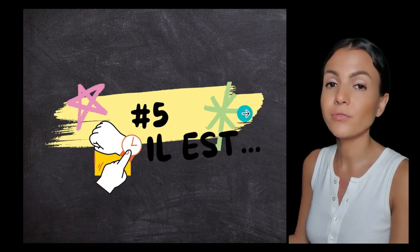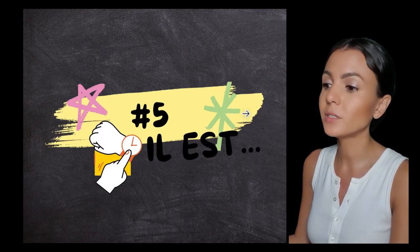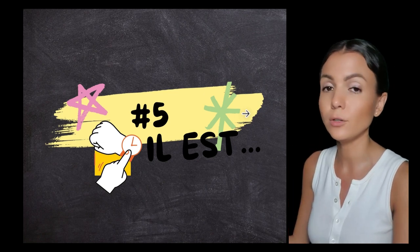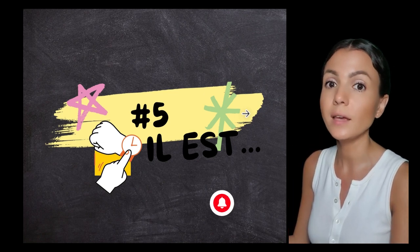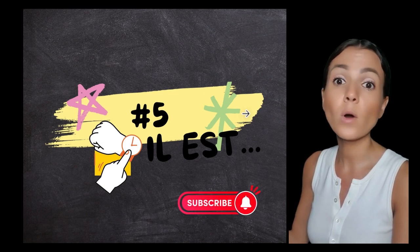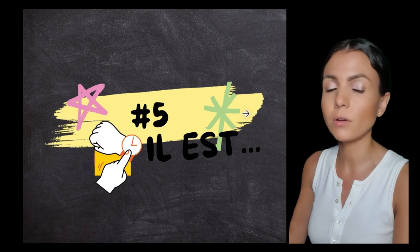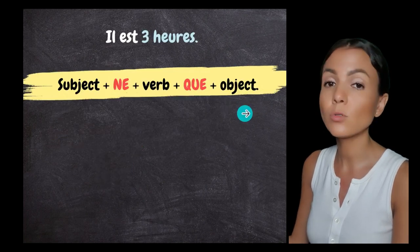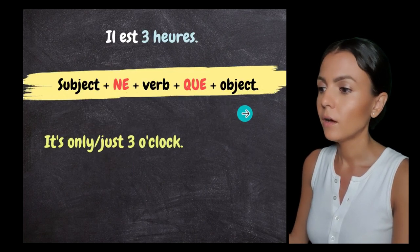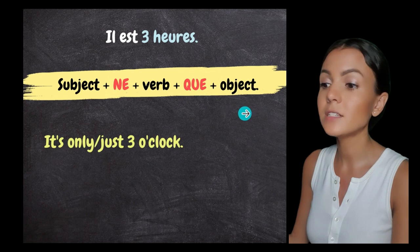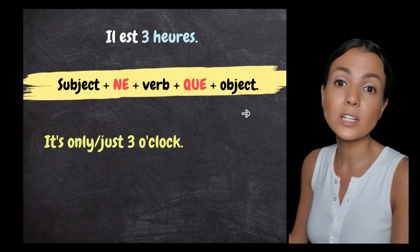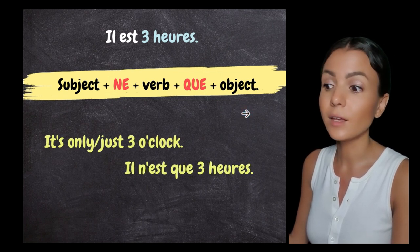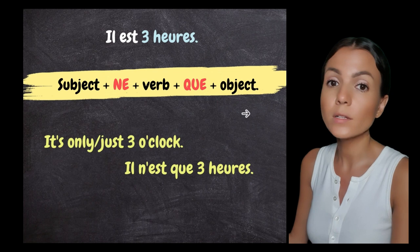Case number five — 'il est' for telling time. In French we say 'il est trois heures', 'il est dix heures'. To say 'it's only three o'clock', you say 'il n'est que trois heures'.